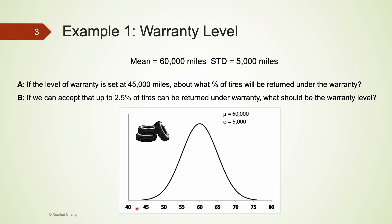The percentage to the left of negative 3 is 0.15 percent, so the answer for part A is that about 0.15 percent of tires will be returned under warranty.